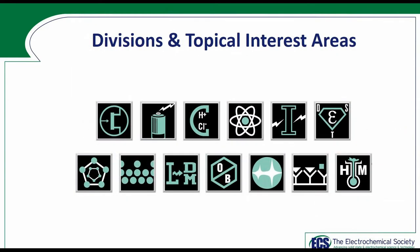ECS has 13 division and topical interest areas, established in 1921, which help strengthen the diverse interests within the society. ECS divisions represent established technical areas where members become active, form friendships and partnerships leading to better research and publications. They also provide travel grants for students to attend meetings and many offer awards to recognize members' accomplishments.